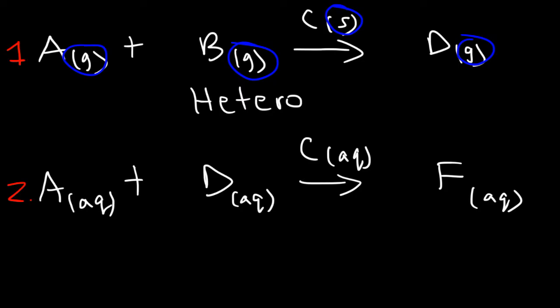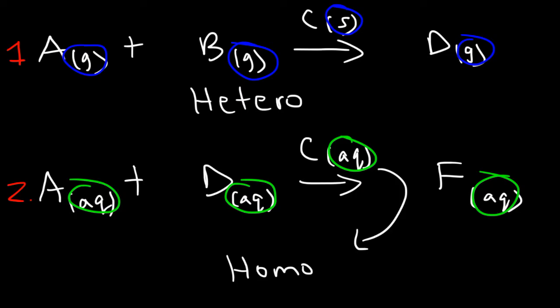Now for reaction 2, the catalyst is in the same phase as the reactants and products. So C represents a homogeneous catalyst. And so that's the difference between the two.